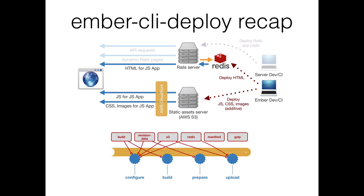You might be familiar with this diagram Aaron put up during EmberCamp, which shows the deploy pipeline. Ember CLI Deploy goes through configure, build, prepare, and upload steps, and alongside that there are various plugins. In our case we're using build plugins, revision data plugins — which give you a fingerprint — S3, Redis, and GZipping. That's effectively what Ember CLI Deploy does — just a quick recap to set the scene.